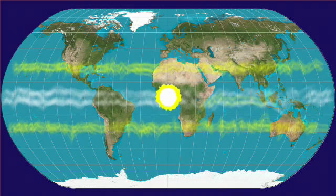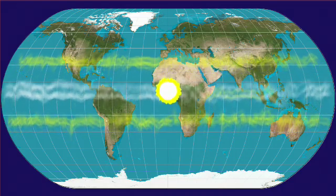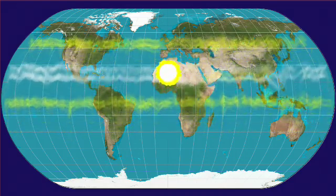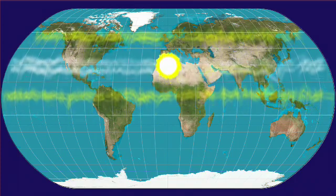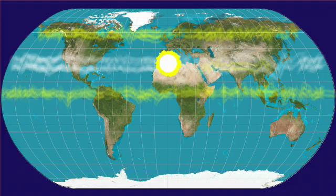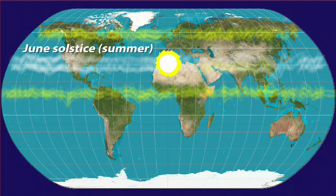From the vernal equinox to the solstice in June, the sun's position in the sky migrates north, and with it the global circulation cells and the positions of the bands of wet and dry weather. This is the northern hemisphere summer.